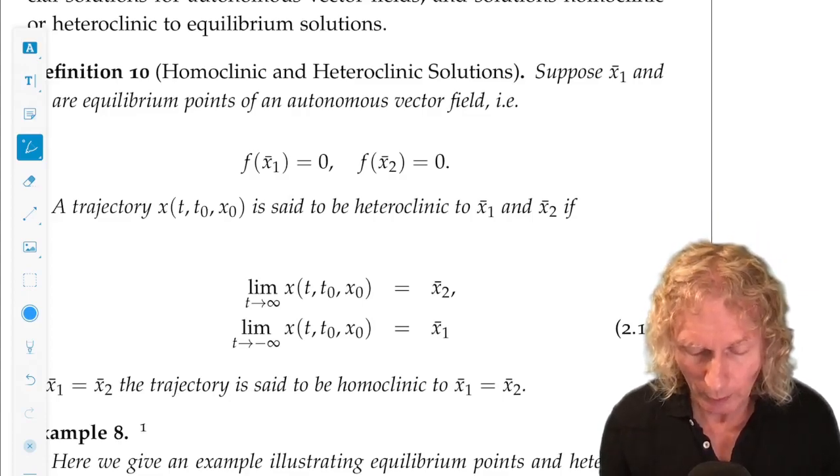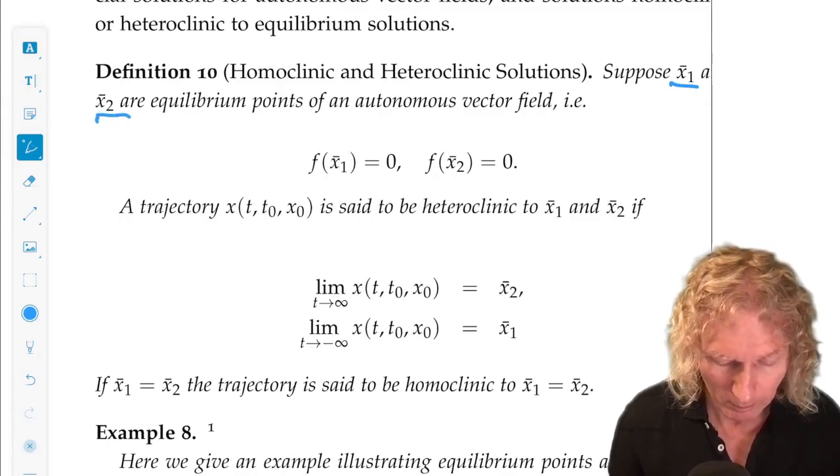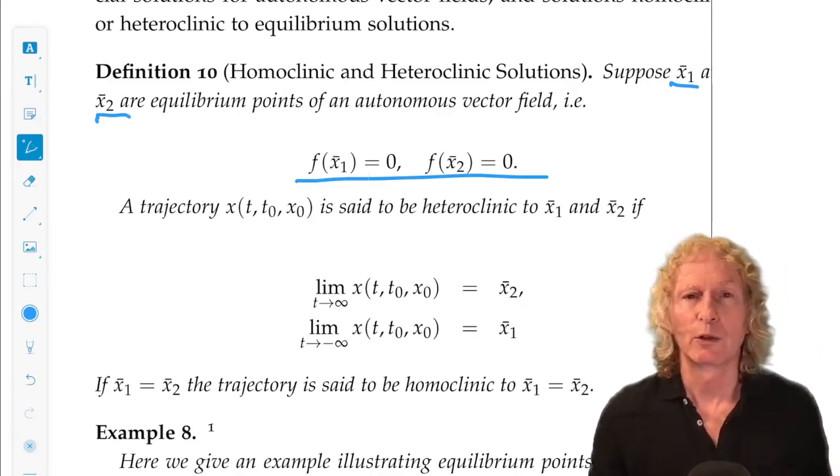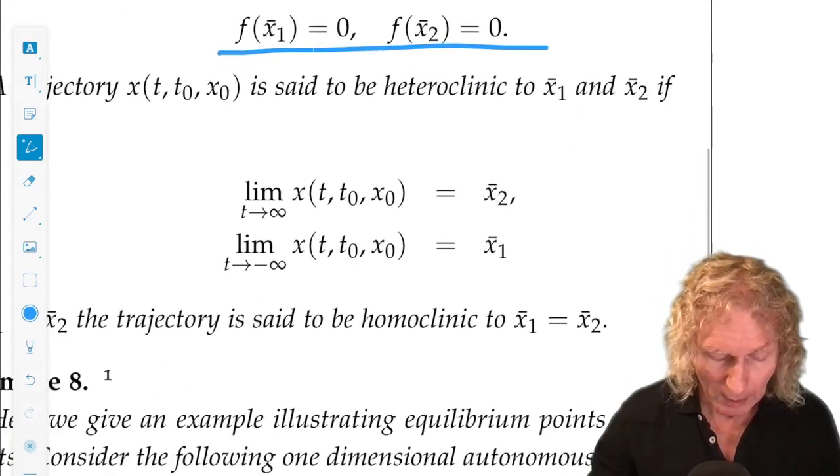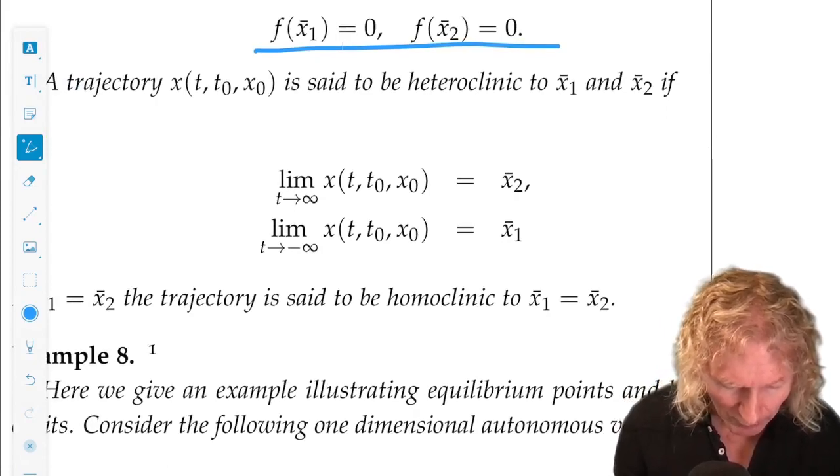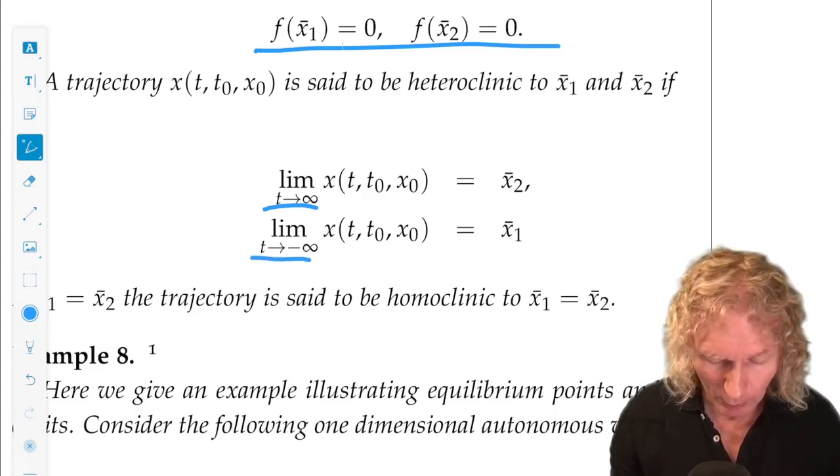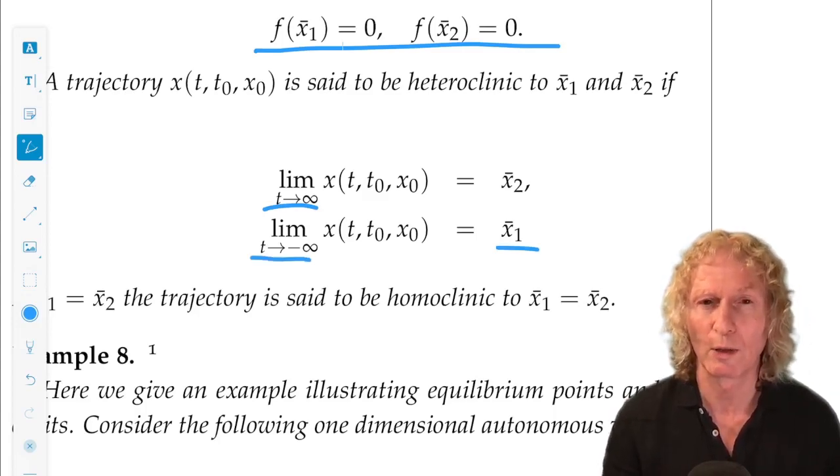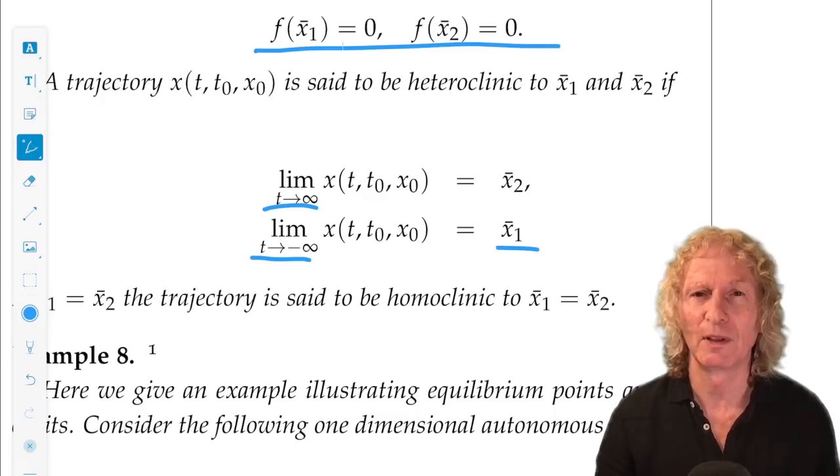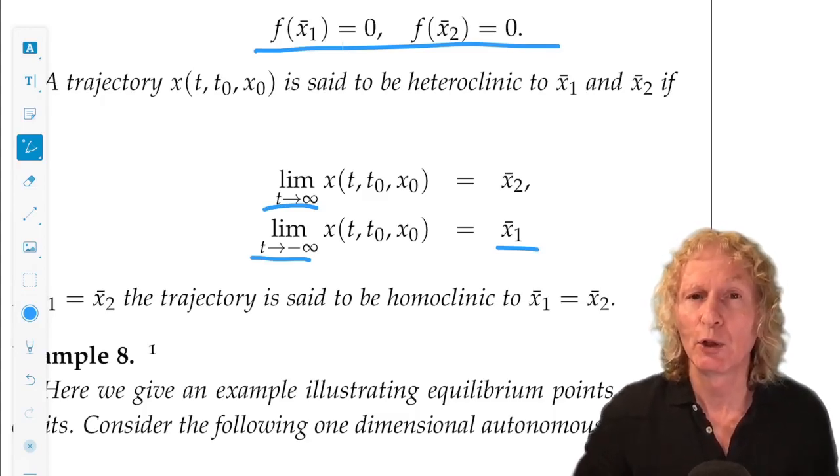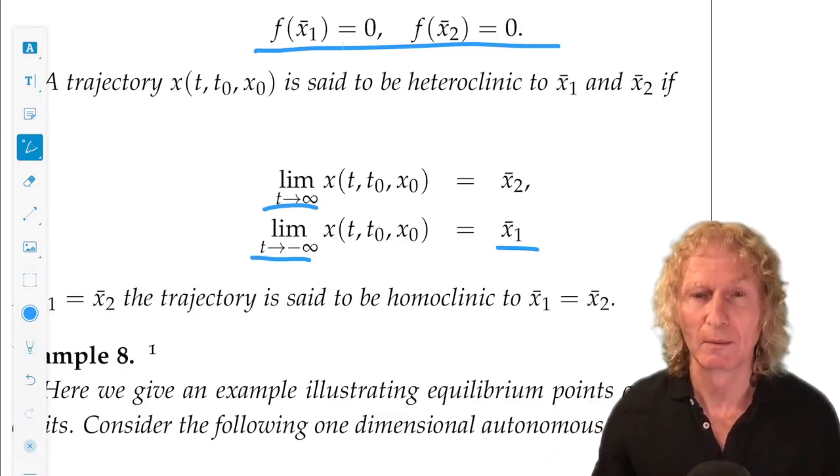So let's pick two equilibrium points, x1 bar and x2 bar. We say that a trajectory is heteroclinic to x1 bar if, as t goes to plus infinity, it approaches one of the points, I'll call it x2 bar, and if t goes to minus infinity, it approaches the other point, I'll call it x1 bar. So these are trajectories that connect, in some sense, different equilibrium points. If the two equilibrium points are the same, we say that we have a homoclinic connection.